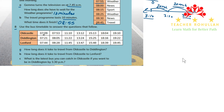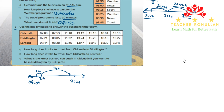Using a timeline with the first bus departing at 7:09, it arrives at Didlington at 7:21. From 7:09 to 7:10 is 1 minute, from 7:10 to 7:20 is 10 minutes, and from 7:20 to 7:21 is 1 minute — totalling 12 minutes. It takes the bus 12 minutes to go from Old Castle to Didlington.